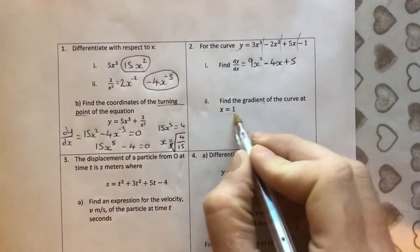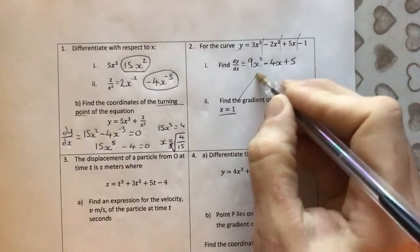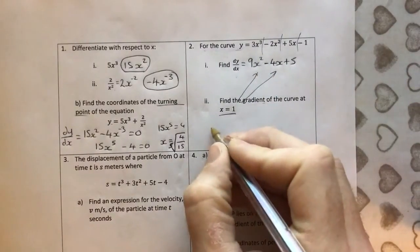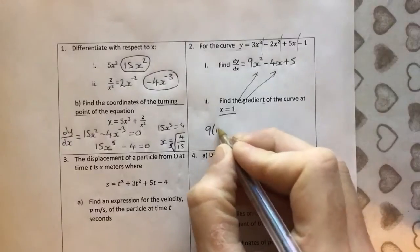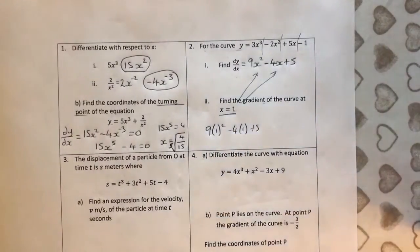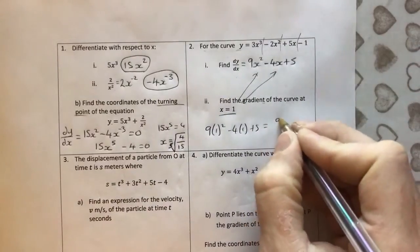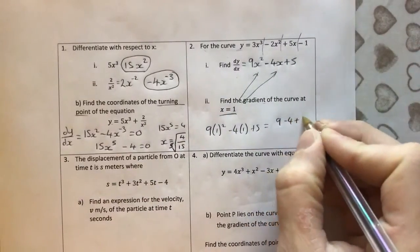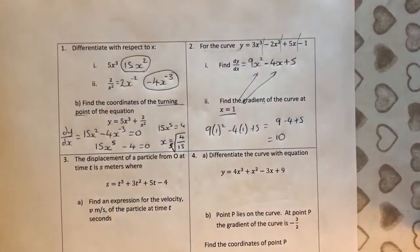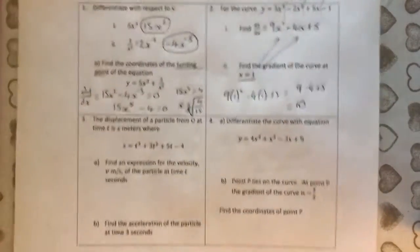And find the gradient of the curve when x equals 1. We're just going to put 1 in, substitute it into here. So, the gradient is going to be 9 times 1 squared minus 4 times 1 plus 5, which is obviously just going to be 9 take 4 plus 5, which is going to equal 10.